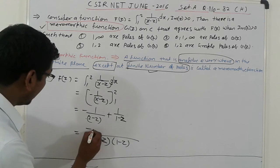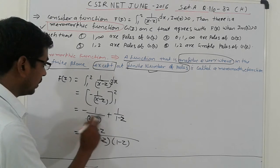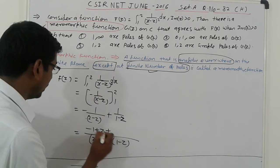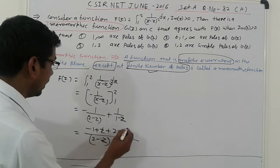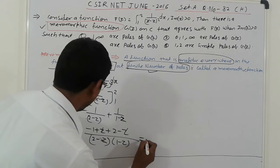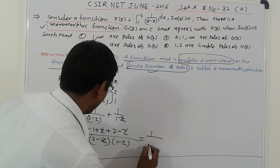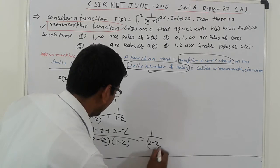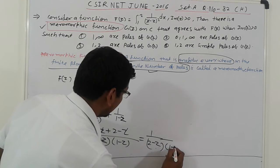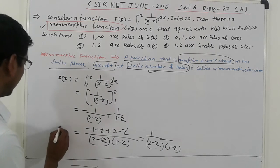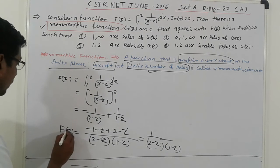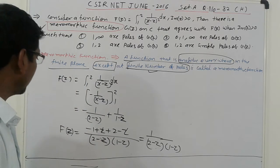So here, it means, minus one plus z, this is taking LCM, and plus here, two minus z. So there, it cancels one. It means, we get one upon two minus z, and one minus z. That is the value of f of z here.